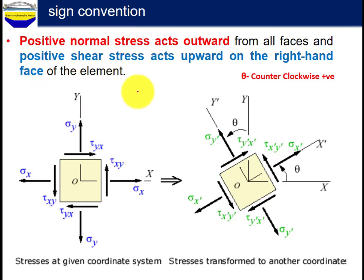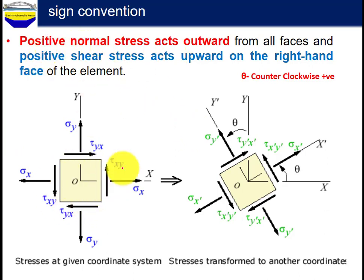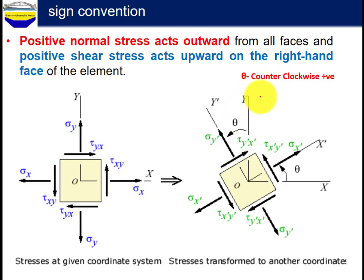Positive normal stress acts outward from all faces. Positive shear stress acts on the face with the outward-acting normal stress in the positive direction. Positive stress acts upward on the right-hand face of the element. This is our sign convention.